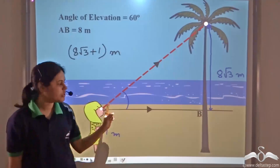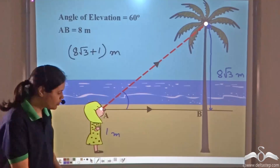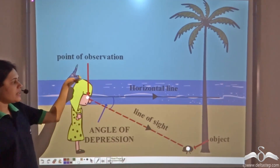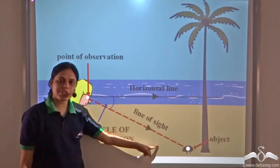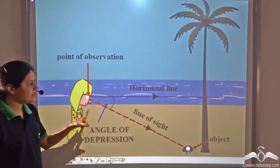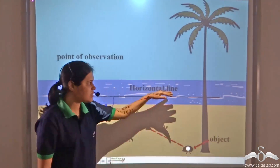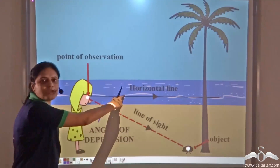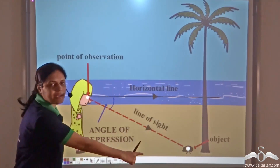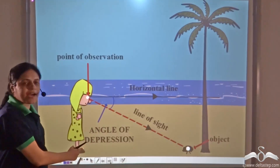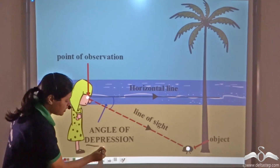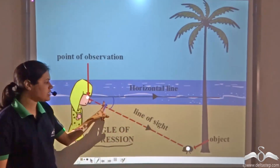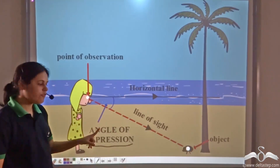But what if the object being viewed is below the horizontal line — that is, it is below the point of observation? In this case, when the object is below the point of observation, the angle between the horizontal line and the line of sight is called the angle of depression.